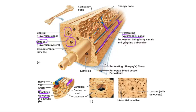Lining the bony canals and covering the trabeculae in spongy bone is the endosteum — a really thin, fine connective tissue. Spongy bone looks very irregular compared to compact bone's nice concentric lamellae. Spongy bone consists of trabeculae — little branch-like structures — which on the inside are also composed of concentric lamellae.